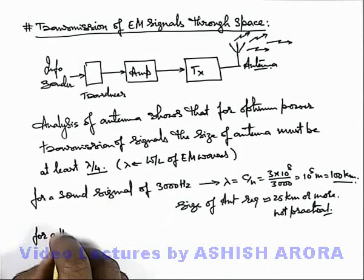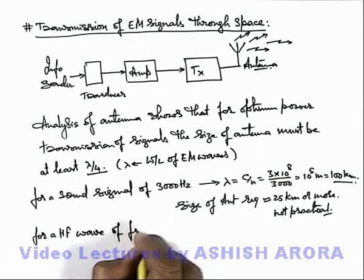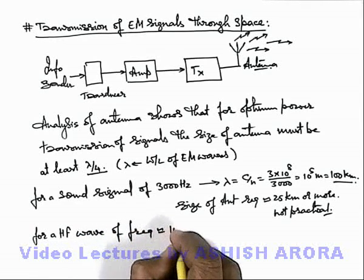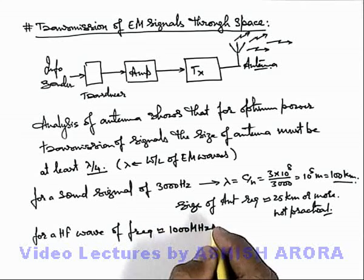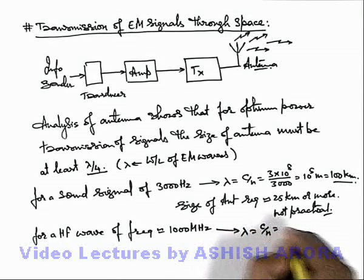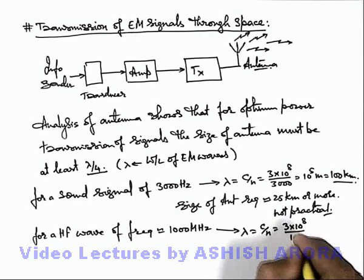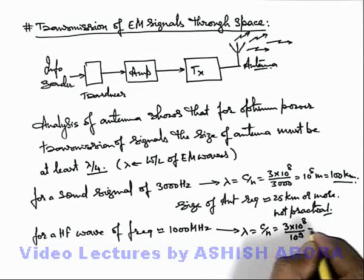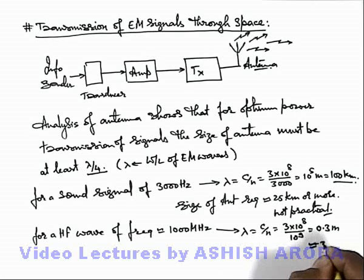But when we talk about a high frequency wave of frequency approximately 1000 MHz, that is 10^9 hertz, if we talk about its wavelength it'll be c/ν, that is 3×10^8 divided by 10^9, that'll be 0.3 meter or 30 centimeter.